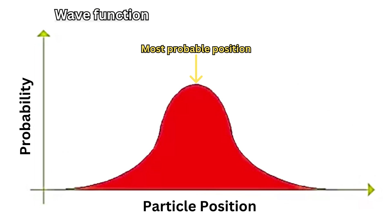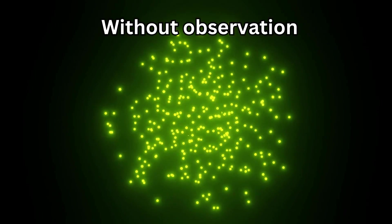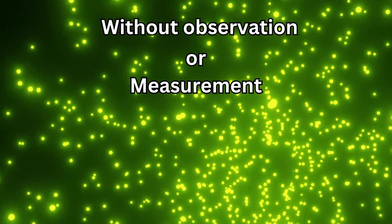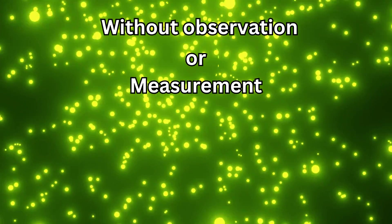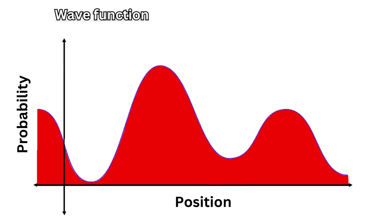Think of the wave function as being similar to a probability wave, or chance wave. Without observation, or measurement, small particles like electrons lack a fixed position or state. Instead, the wave function depicts every potential location, or state, that they could be in, sort of like a dispersed wave of potential.